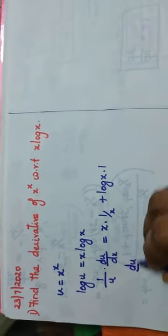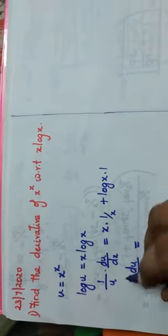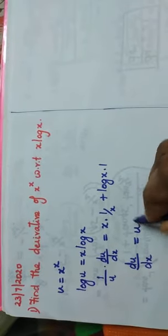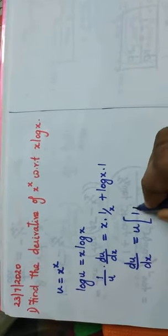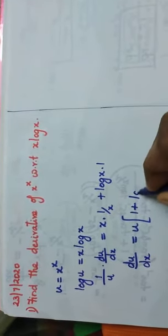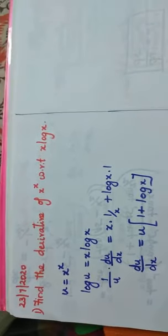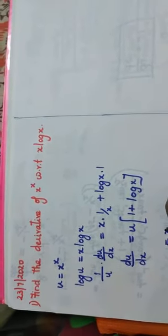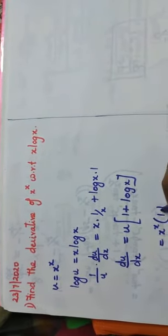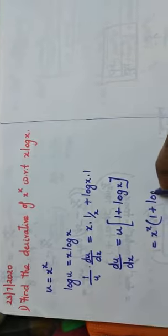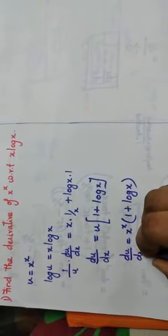So du/dx, bringing u to the right side: 1/x cancels, giving 1 + log(x). What is my u? It is equal to x^x. So du/dx = x^x · (1 + log x).